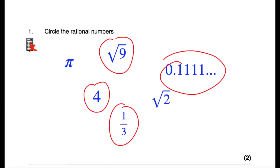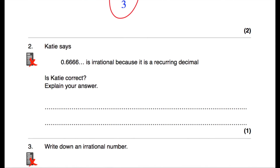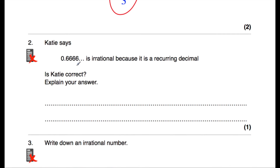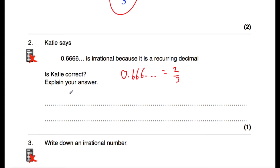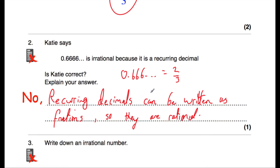Question number two says: KD says that 0.6666 recurring is irrational because it is a recurring decimal. Is KD correct? Well, recurring decimals can be written as fractions, and fractions are rational. So KD is incorrect. 0.6666 recurring is equal to two thirds, expressed as a fraction, so it's rational. Recurring decimals can be written as fractions, so they are rational.